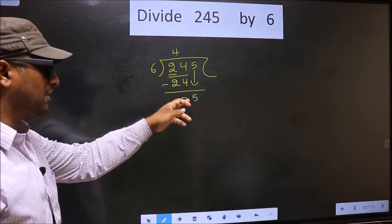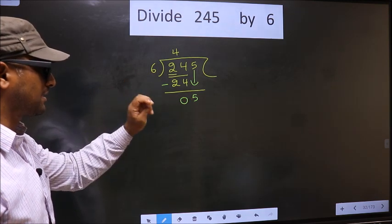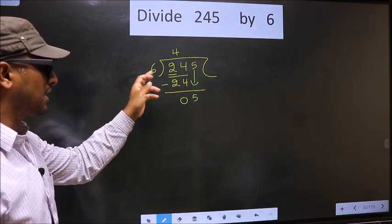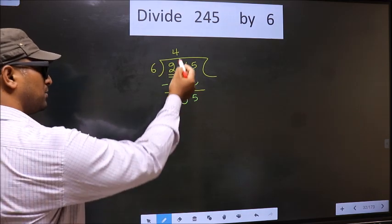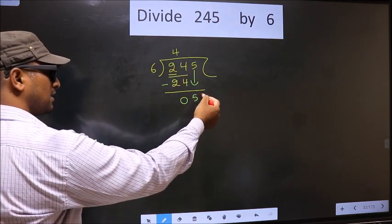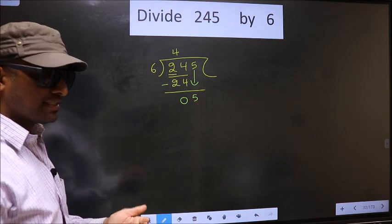Over here, we have 5. Here, 6. 5 is smaller than 6. So, what many do is, they put a dot and take 0 here. Which is wrong.